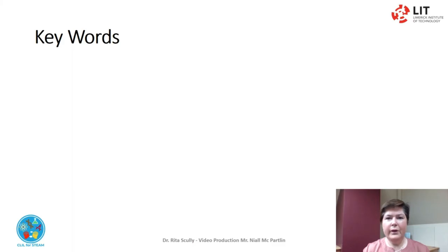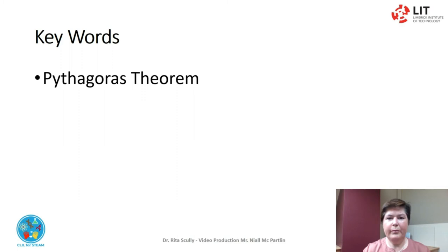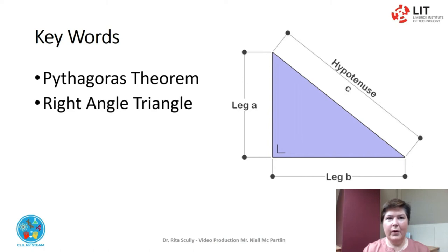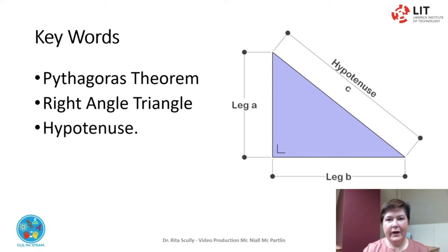There are some key words that we use in this video. Pythagoras theorem provides the relationship between the sides of a right-angled triangle. A right-angled triangle consists of two legs and a hypotenuse. The two legs must meet at 90 degrees or a right angle. The hypotenuse is the longest side in a right-angled triangle and it is opposite the right angle.